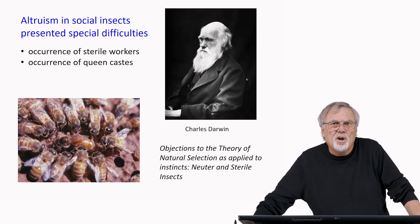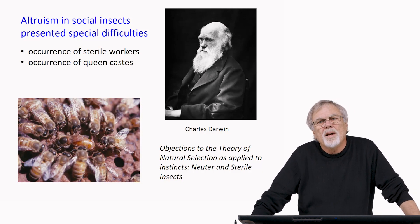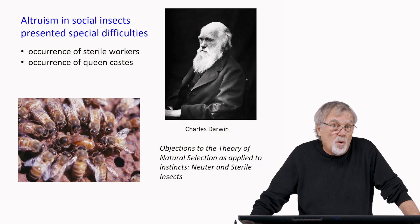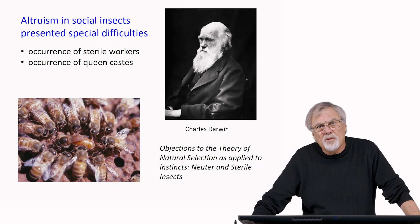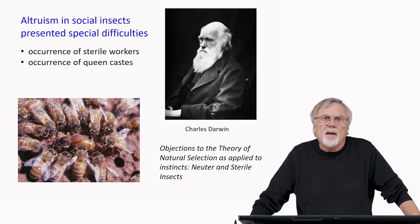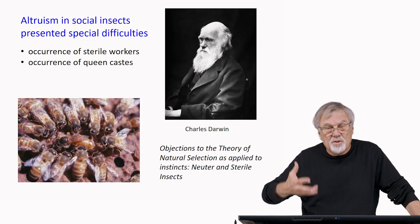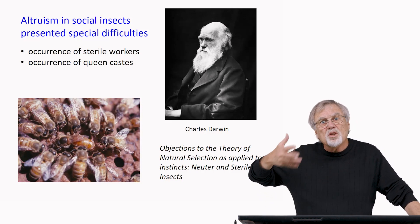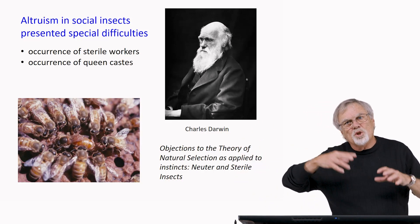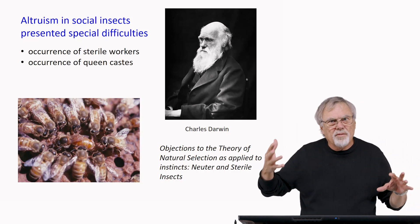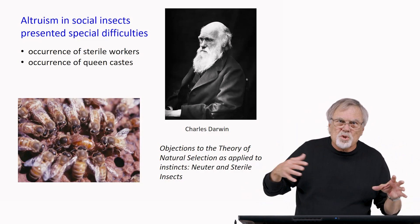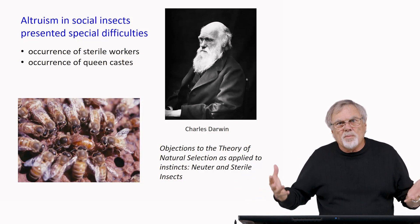Altruism and social insects presented Charles Darwin with very special difficulties for his fledgling theory of evolution by natural selection. Evolution by natural selection required that individuals survive and reproduce. Those that out-survive and out-reproduce others have characteristics that cause them to increase in frequency in the population from one generation to the next. This is what we call evolution. So for evolution to occur, for evolution of traits to occur, individuals had to survive and reproduce.